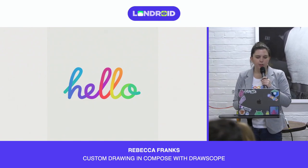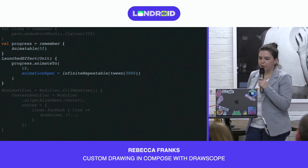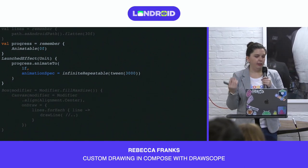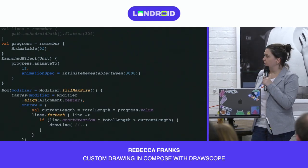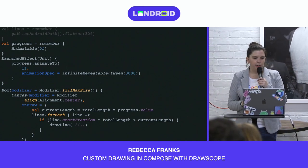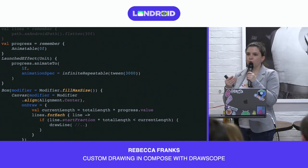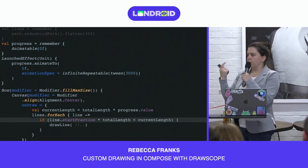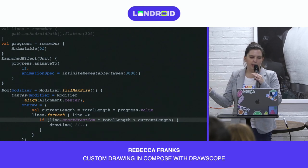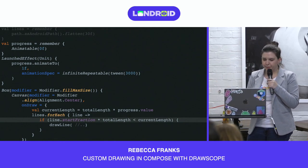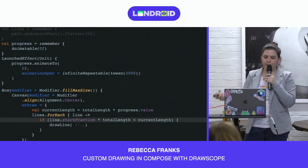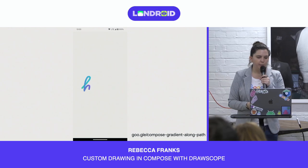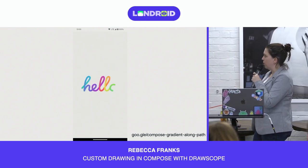The last part is to animate this drawing of the line over time. We add a progress animatable object that animates repeatedly from zero to one every three seconds. We use this value to determine if we should draw the next line on screen — checking if the total fraction of the line starting is less than the current progress of our animation. We simply don't draw lines that aren't part of that whole progress. Our path now draws based on the progress, repeating every three seconds from scratch.